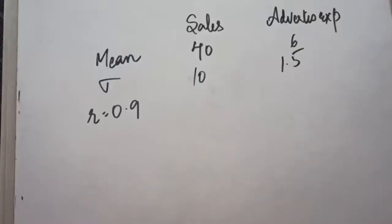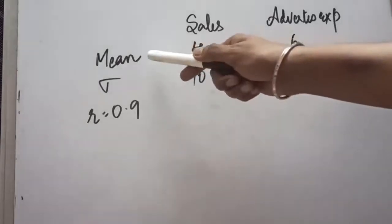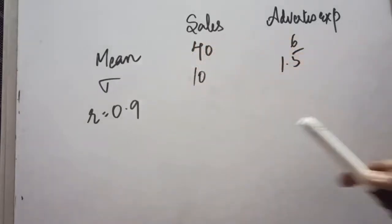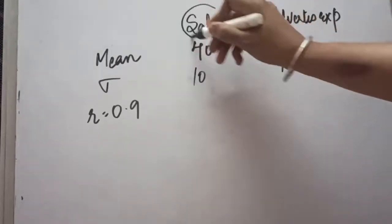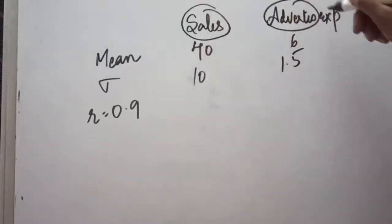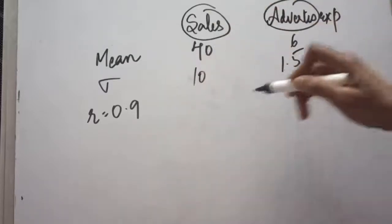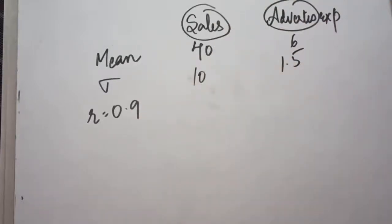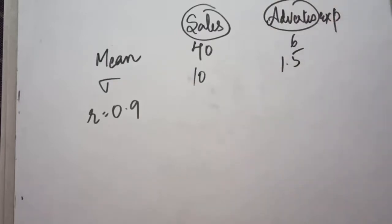In this question, we will see how we can calculate the regression equations with the help of mean, standard deviation, and correlation. It has been given that the mean of sales and advertisement expenditure is 40 and 6, standard deviation is 10 and 1.5, and the correlation for both sales and advertising expenditure comes out to be 0.9.